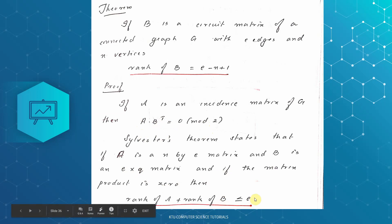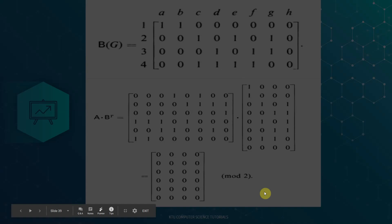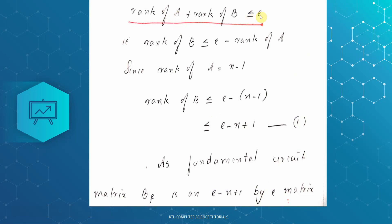Rank of A plus rank of B is less than or equal to e. So rank of B is less than or equal to e minus rank of A. Since A is an incidence matrix, the rank of the incidence matrix A is equal to n minus 1. We will substitute that here, so rank of B is less than or equal to e minus (n minus 1), which gives e minus n plus 1. That is the first condition: rank of B is less than or equal to e minus n plus 1.